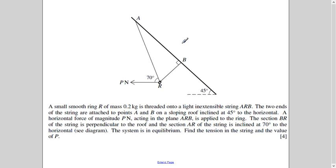In this question, the mass of a smooth ring R is 0.2 kg. This is the first piece of information. A string is inextensible. So this is the assumption which is made always, most of the time.